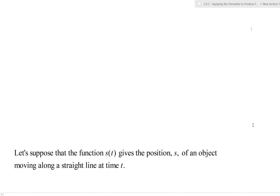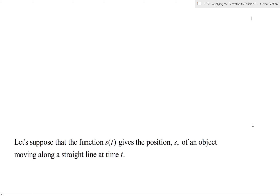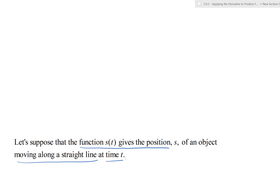We start with the situation in which we assume we have a position function. Let's call the position function S. S is going to give the position of an object moving along a straight line at time t. Position has units like feet, meters — some measurement of length — and it tells us, relative to some starting location, where this object is at time t.